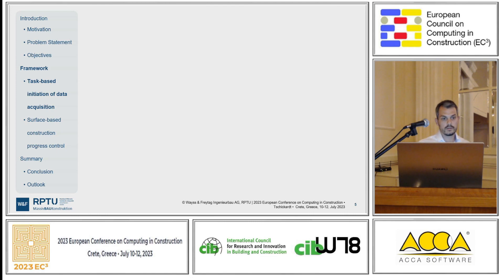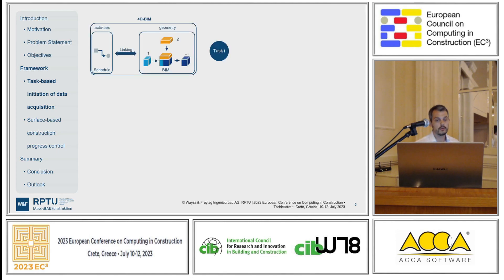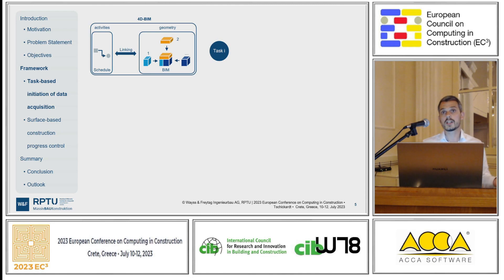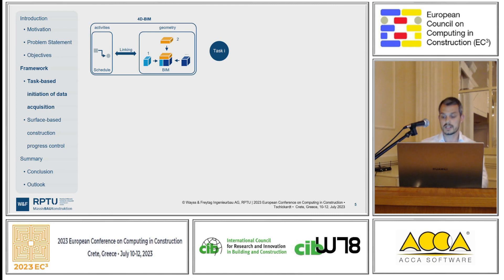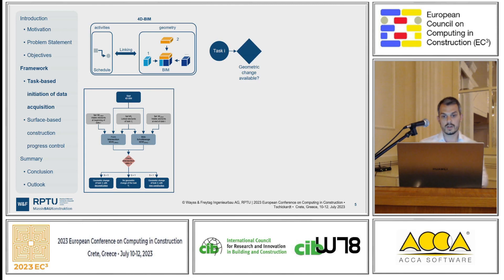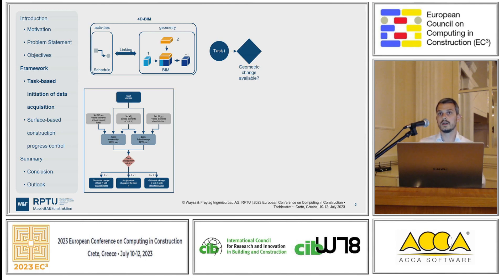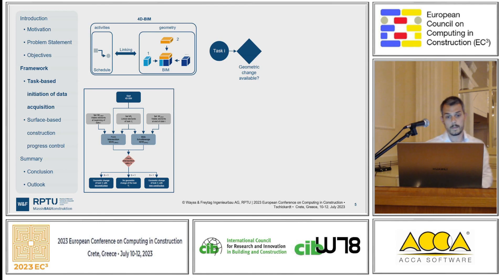Let's go to the task-based initiation of data acquisition. The beginning of my framework is the 4D BIM, which can consist of more than one partial model — I'm not focusing on one IFC file. I start with the evaluation of a task within the schedule, which is in the domain of activities, and I run an algorithm which checks if the task creates a geometric change. For example, if I have concrete work, the actual concrete geometry is a change, but if you do the finishing after stripping of formwork, only the finishing — there's no geometric change available. If there is no change available, no data acquisition can be done.